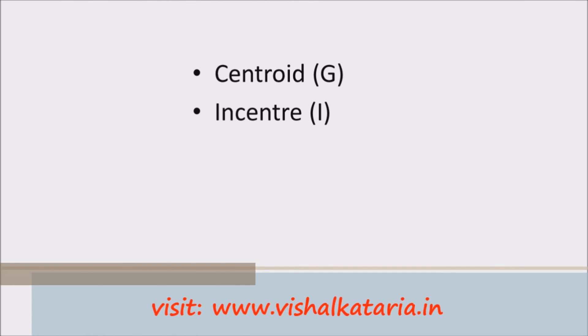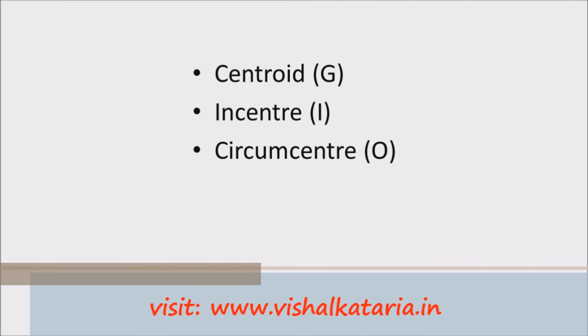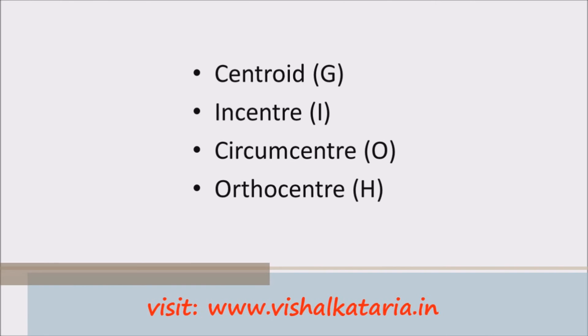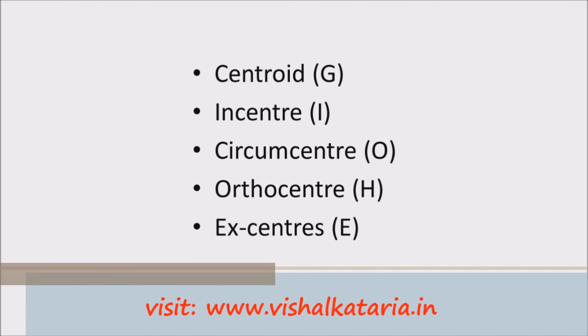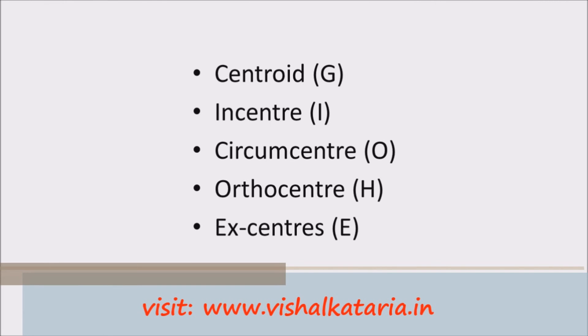Let's quickly recap the centers of a triangle we've covered. First, the centroid — point of intersection of medians. Second, the incenter — point of intersection of angle bisectors. Third, the circumcenter — point of intersection of perpendicular bisectors. Fourth, the orthocenter — point of intersection of altitudes. And finally, the excenter — point of intersection of exterior angle bisectors. That's all for today's topic. Next time we'll meet with a new topic — thank you and have a nice day!